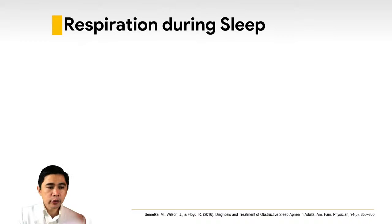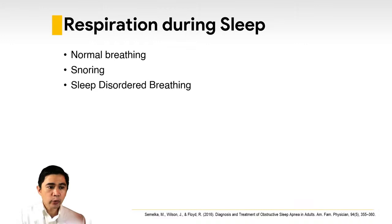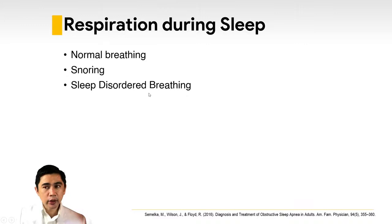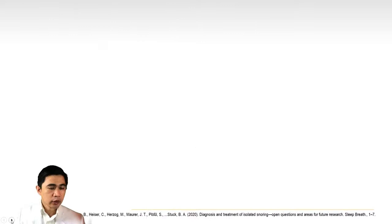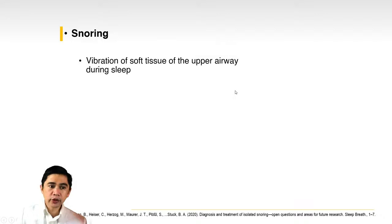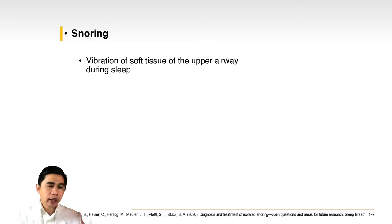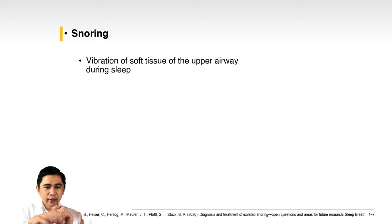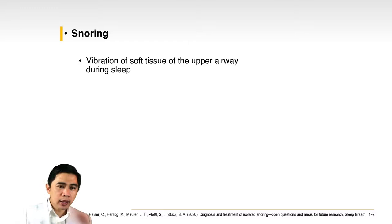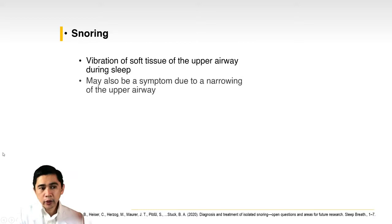What are the types of respiration during sleep? We have normal breathing, snoring, and sleep-disordered breathing. Snoring is the vibration of soft tissue of the upper airway during sleep. When air passes through the collapsible segment, it tends to vibrate the soft tissue, producing a sound — much like blowing on a piece of paper and making it flutter. In the upper airway, snoring is usually produced by the soft palate or the uvula.